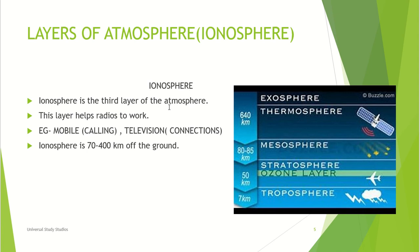The ionosphere is the third layer of the atmosphere. This layer helps radios work — examples include mobile phones for calling, and televisions for connections so you can see programs on your TV at home. The ionosphere is 70 to 400 kilometers off the ground.